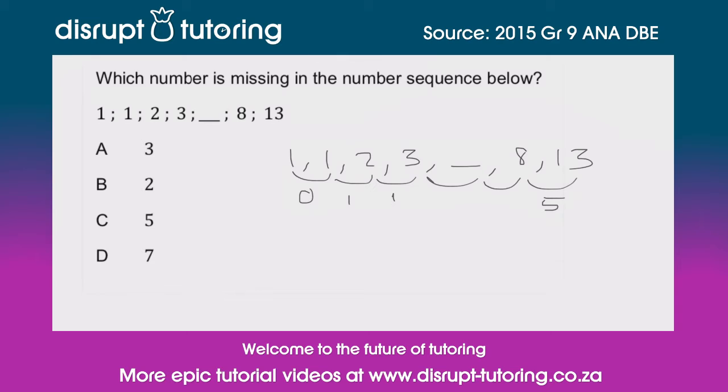Now when it comes to a question like this guys, this is where you need to pay attention in class because this is a very special number sequence. It's called the Fibonacci sequence and what we're essentially doing is we're taking 1 and then we have another 1.